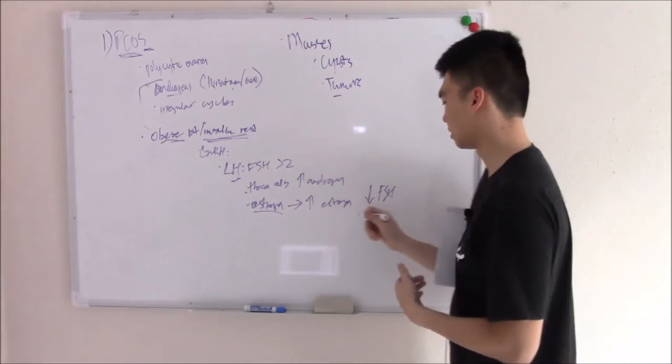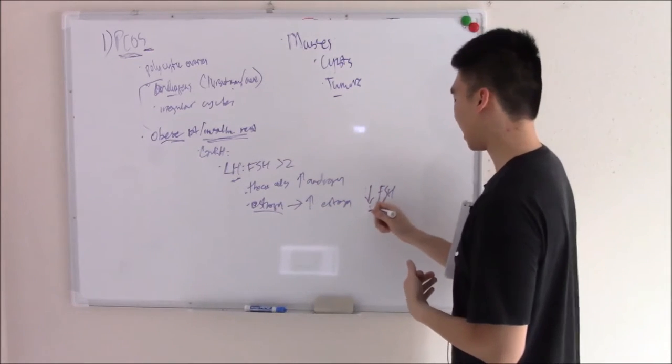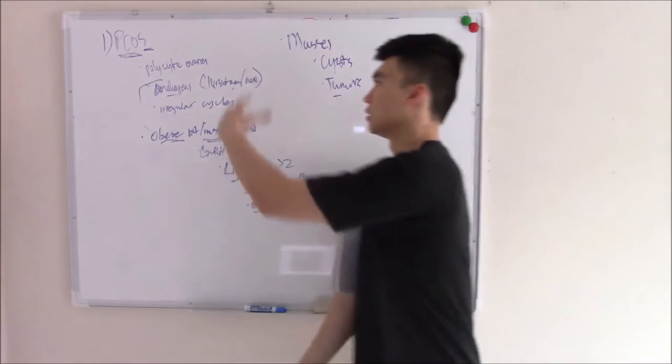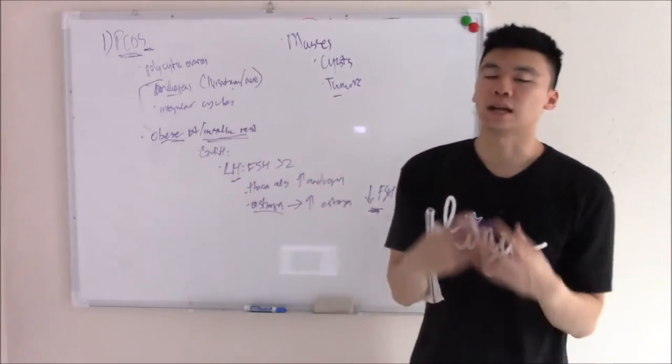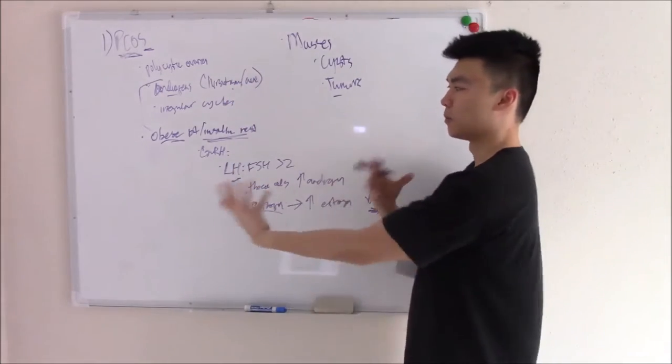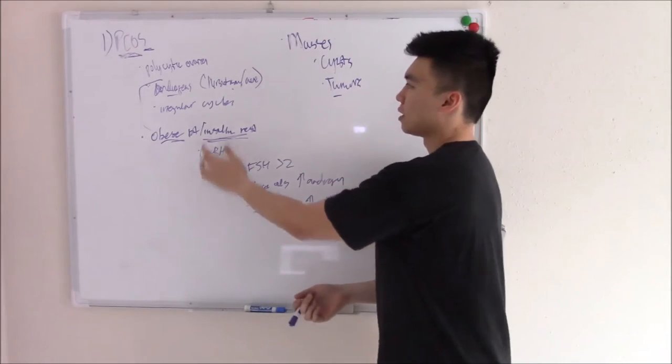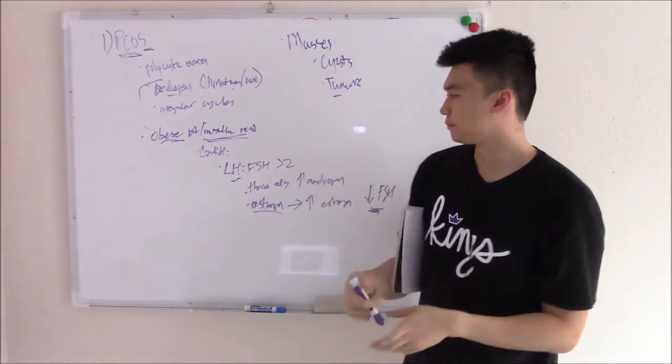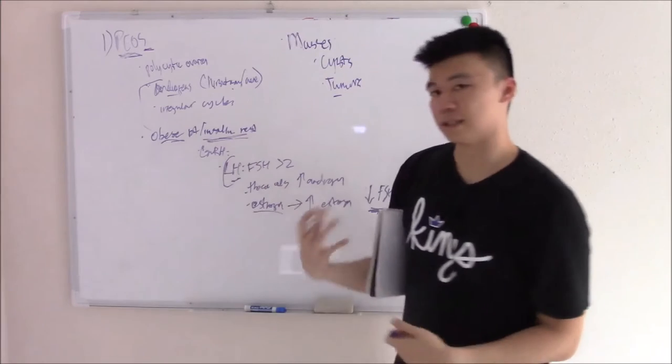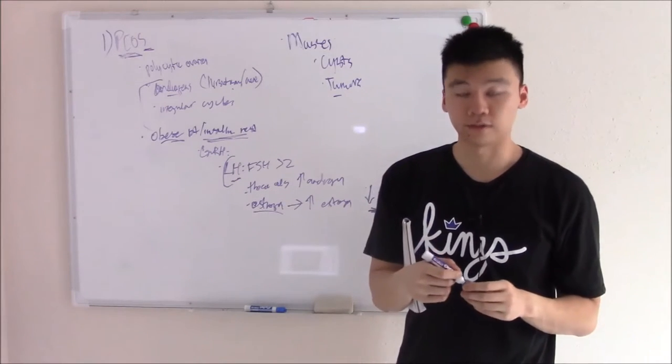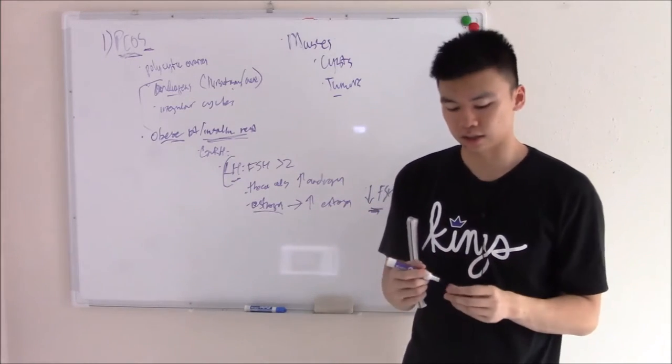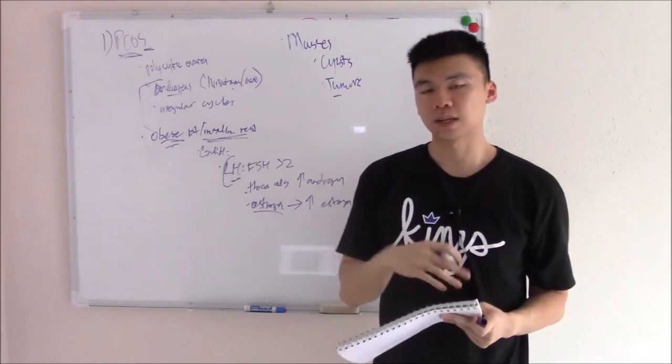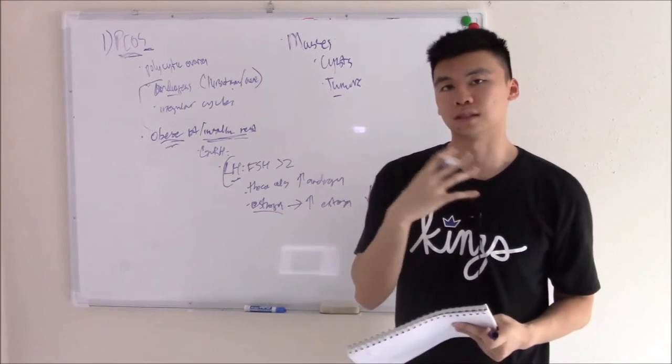That lower FSH means your follicles don't grow, become cystic, and degenerate. That is PCOS. You just need to know how to recognize it - androgens, irregular cycles, patient may be obese. Increased LH, increased androgens can be found on labs. How do you treat it? Weight loss, conservative management, or regulate the cycle with contraceptives.